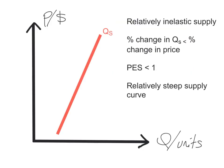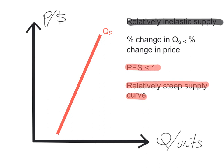What about relatively inelastic supply? Supply is not perfectly inelastic, but relatively inelastic, which occurs when you have a relatively steep supply curve. The price elasticity of supply will be less than 1 — a positive value, but less than 1 — because the percentage change in quantity supplied will always be smaller than the percentage change in price. In this situation, we say that supply is relatively inelastic.